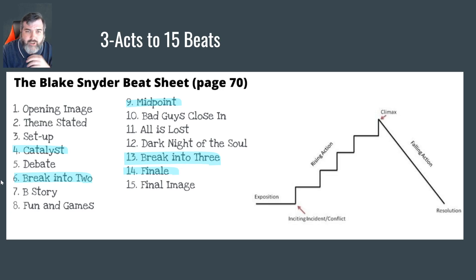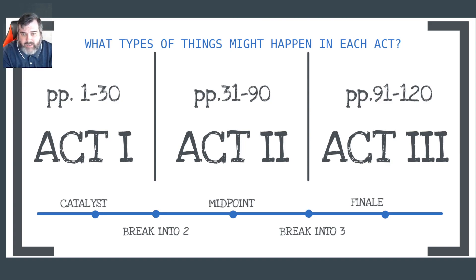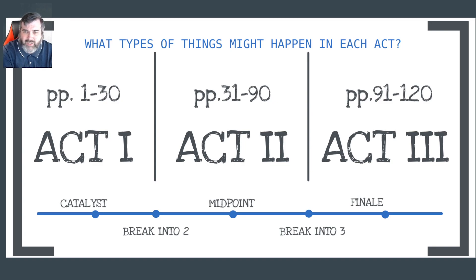Act one runs pages one to 30, covering the catalyst and break into two. Act two is pages 31 to 90, containing the midpoint and break into three. Act three is pages 91 to 120, which is your finale — roughly 30 pages each. Act two is probably going to be the majority of what you're looking at.